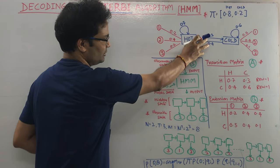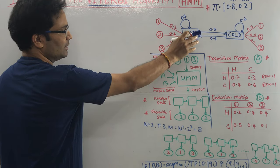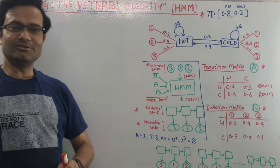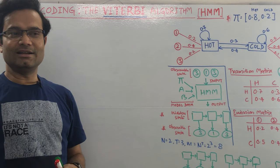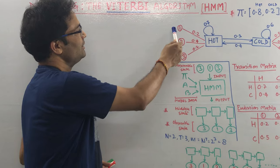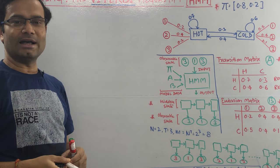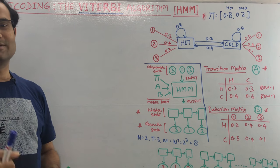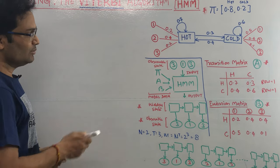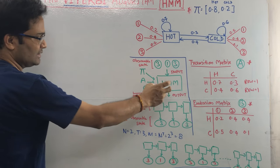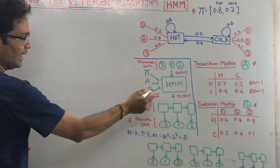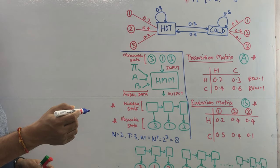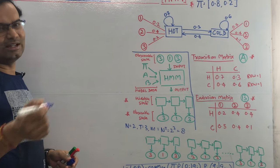Today we are going to solve this problem using the Viterbi algorithm. The problem is that these are the hidden states and these are the observable states. A person sitting inside a room or basement cannot tell how the weather is outside. In a hidden Markov model, we create a machine learning model — we give the training set, testing set data, then create the model, give the data, and get the predicted value.